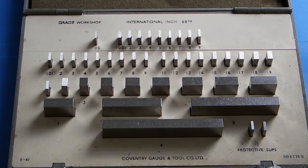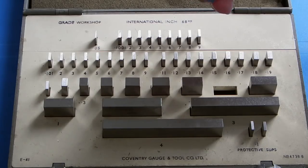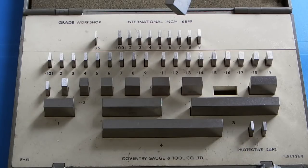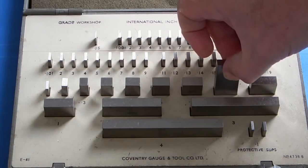These are just steel blocks, hardened, ground, and the faces are lapped. You can see on these they look wet. They have actually got a layer of oil and I think there's some grease on there, mainly to stop the faces going rusty.